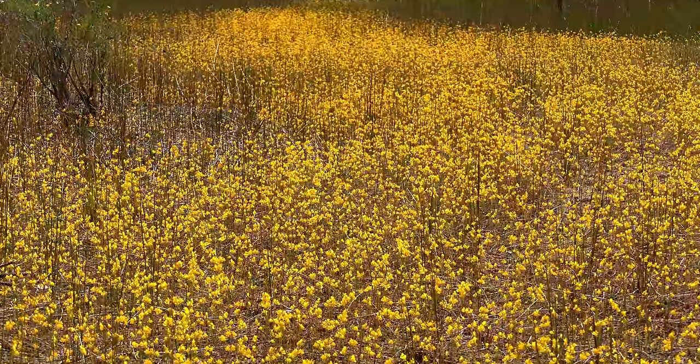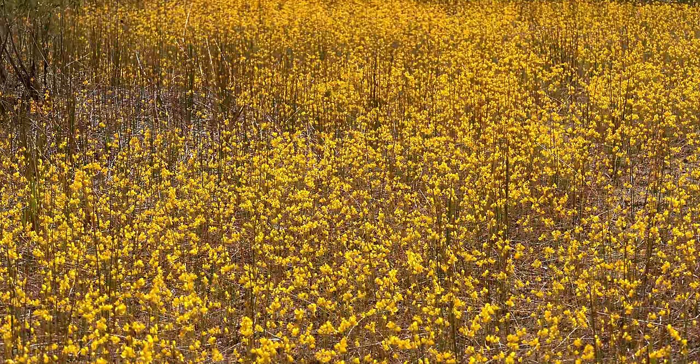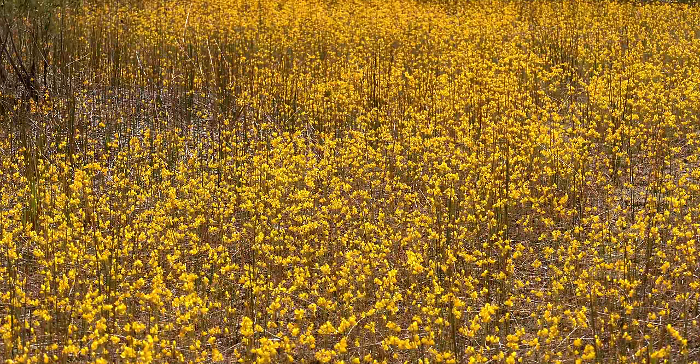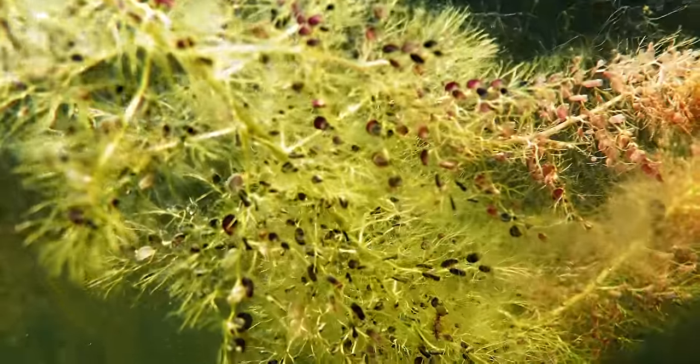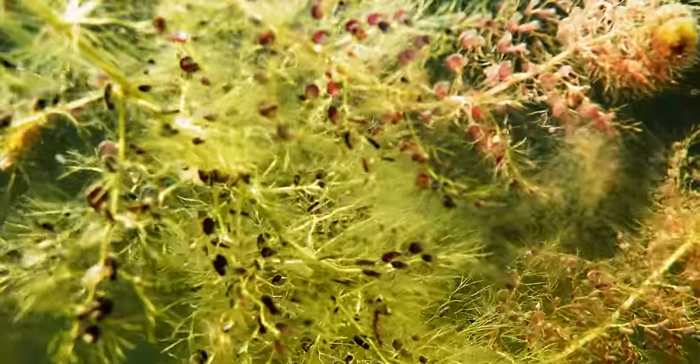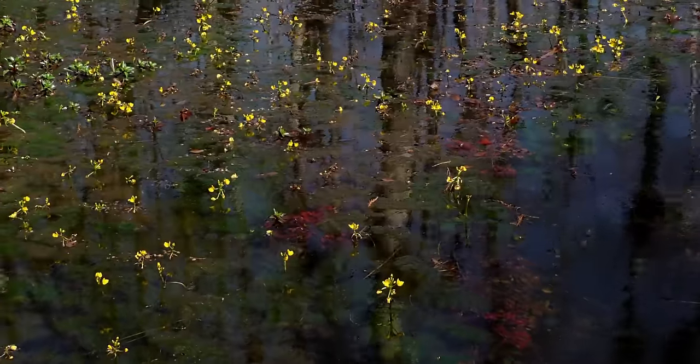Bladderworts are divided into two categories. Terrestrial, living in wet, waterlogged, or temporarily flooded areas, and aquatic, either suspended and free-floating on the surface, or fixed with a few shoots nestled in the substrate.